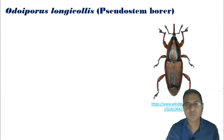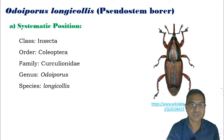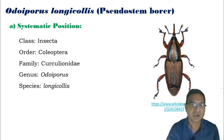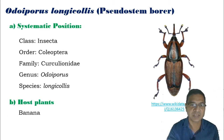Now, the systematic position of Odoiporus longicollis: Phylum Arthropoda, Class Insecta, Order Coleoptera — commonly known as beetles — Family Curculionidae, Genus Odoiporus, Species longicollis. This pest specifically attacks banana, which is its host plant.